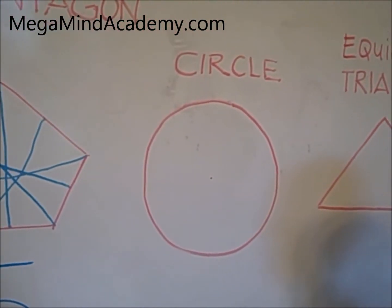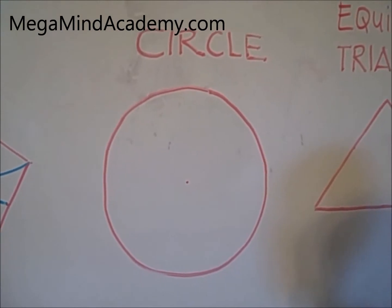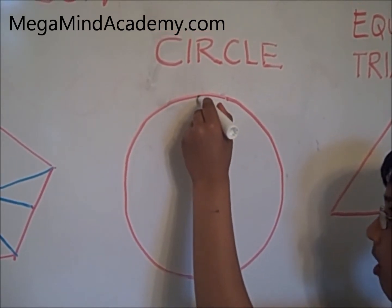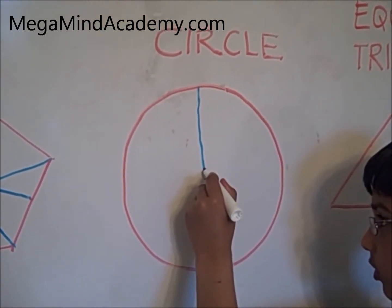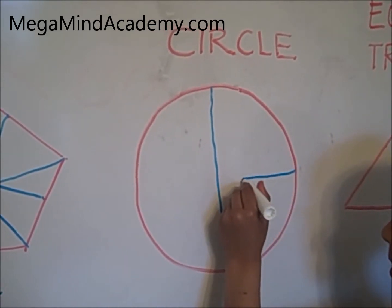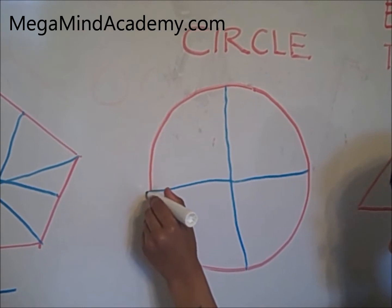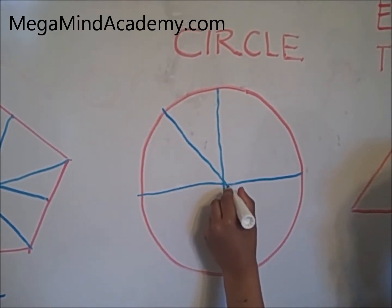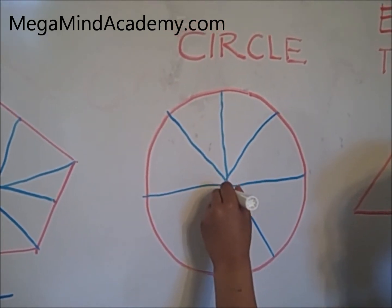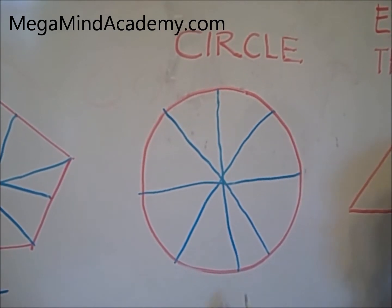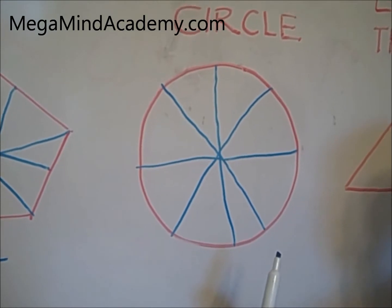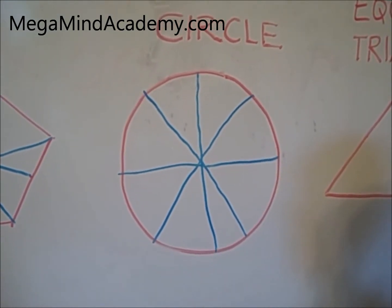The next one is a circle. The circle has an infinite number of lines of symmetry — they all have to pass through the center. There are a lot of lines of symmetry for the circle, if you look at any angle. They all have to pass through the middle.